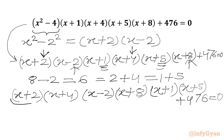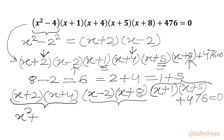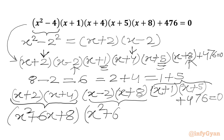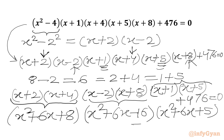Now we multiply these bracket pairs. For (x + 2)(x + 4) we get x² + 6x + 8. For (x - 2)(x + 8) we get x² + 6x - 16. For (x + 1)(x + 5) we get x² + 6x + 5. Then we have plus 476 equals 0.